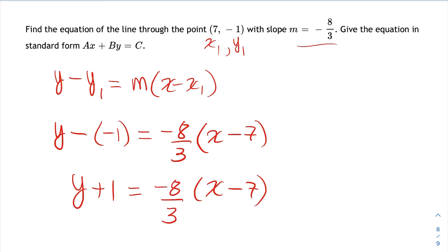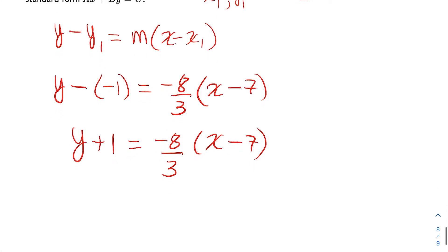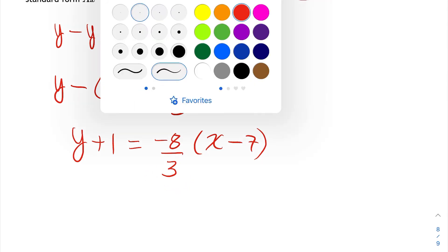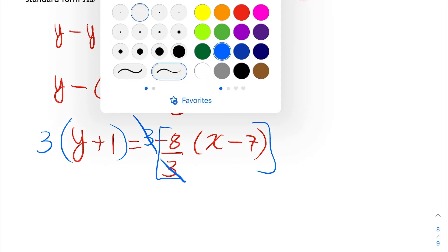And now what I'm going to do is multiply both sides of this equation by 3, the denominator of the fraction. When you multiply both sides by 3, the 3s on the right side just cancel each other out.